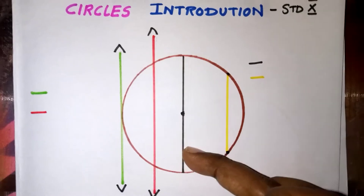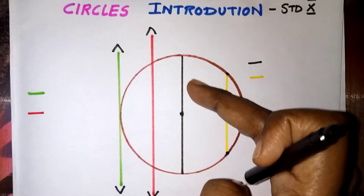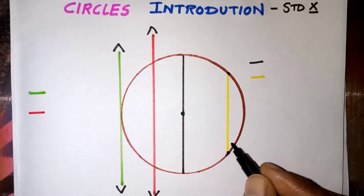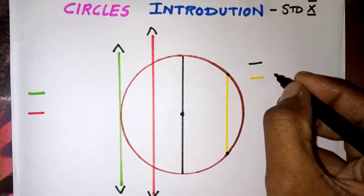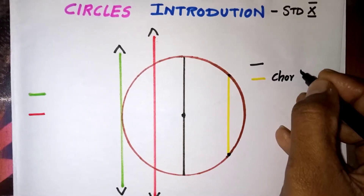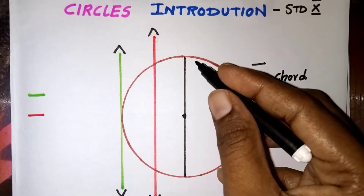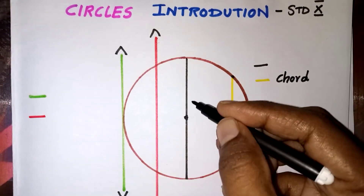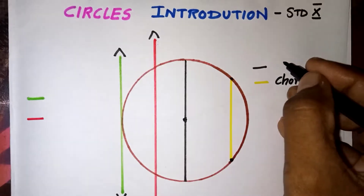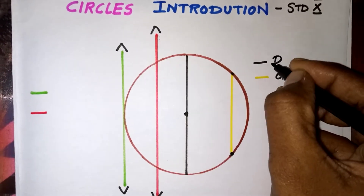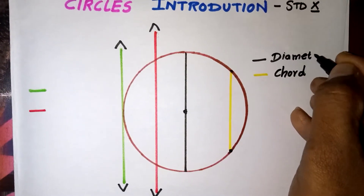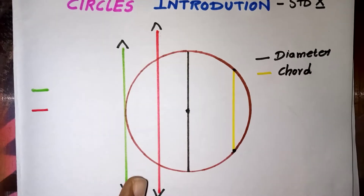This is also a chord, but this chord is passing through the center, so we can say that this is the longest chord of the circle. The yellow line represents a chord, and the black color line is also a chord, but since it passes through the center, it is called a diameter.